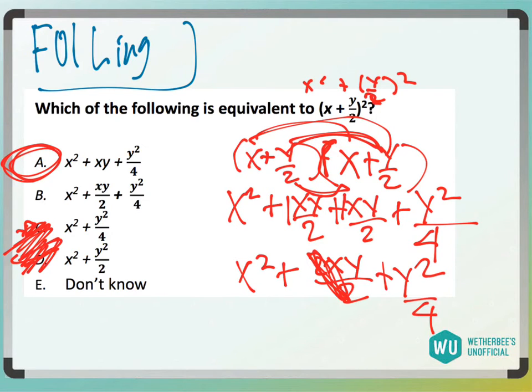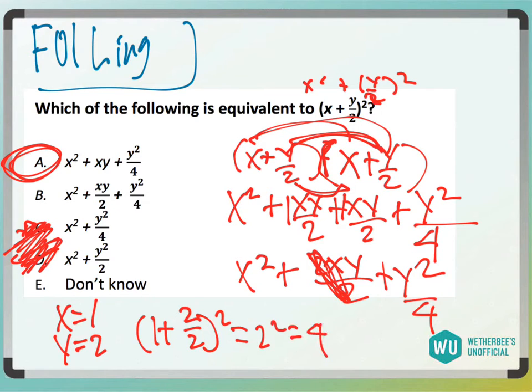Another thing you could do is pick numbers for this. Let's call x equals 1 and y equals 2. If x is 1 and y is 2, I'm going to get 1 plus 2 over 2 squared, which is going to be 1 plus 1 squared, which would be 2 squared, which would be 4.